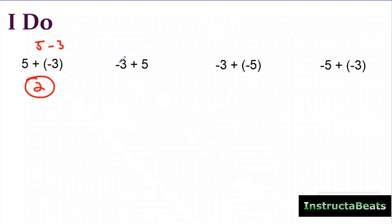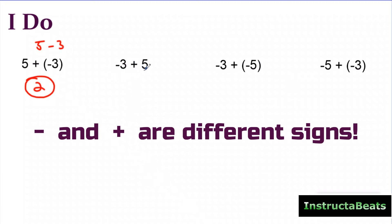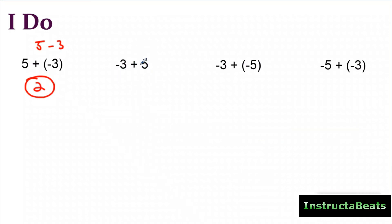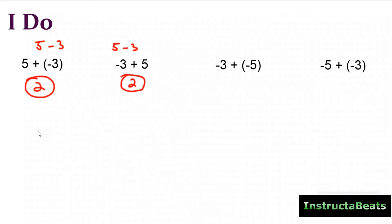For (–3) + 5: again I ask, same sign or different? Negative three and positive five are different signs, so I subtract them, putting the number with the biggest absolute value on top. Five has a bigger absolute value than negative three, so I do five minus three — my answer is two — and then the number with the biggest absolute value is positive, so I leave this as positive two. No need to draw out a number line and cross over zero.